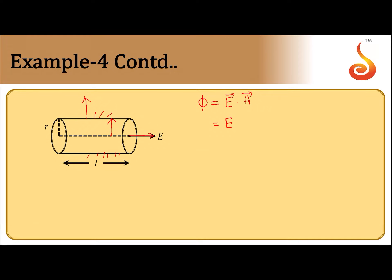E⋅A can be written as EA cos θ, and here θ equals 90°. So what happens? Flux will become EA cos 90. Cos 90 becomes 0.